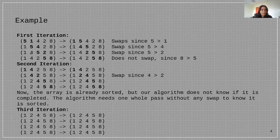Now we have 1, 4, 5, 2, 8. Again we swap 5 and 2 because 5 is greater than 2. At the end we get 1, 4, 2, 5, 8. No swap occurs here as 8 is greater than 5.